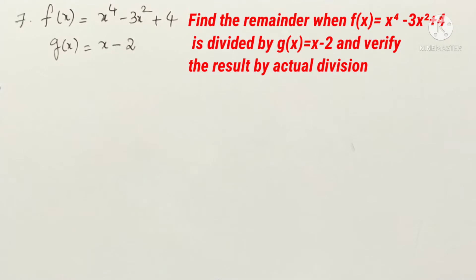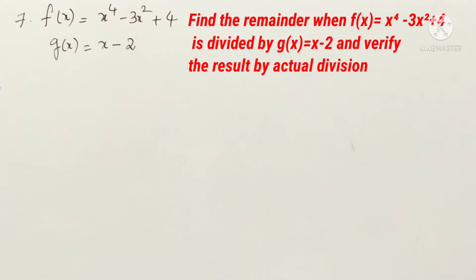Hello students, welcome to my channel. In this video we are going to see problems 7 and 8 in Exercise 2.3. The 7th problem: find the remainder when f(x) is divided by g(x) = x minus 2, and verify the result by actual division.